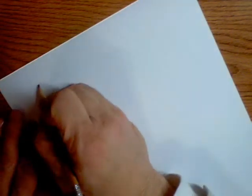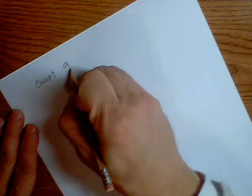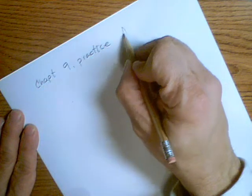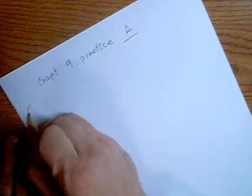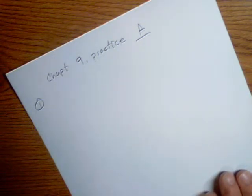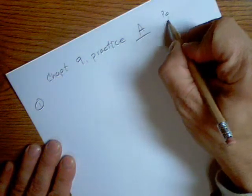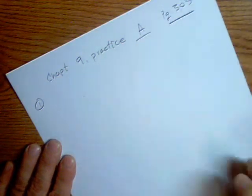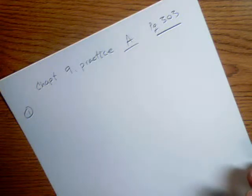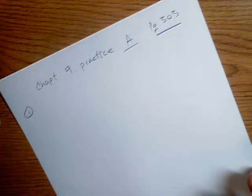Let's go on to Chapter 9 practice problems. We'll do some practice problems A. Let's do number 1 — these practice problems are on page 303. Number 1: the lowest outdoor temperature ever recorded is negative 128.6 degrees Fahrenheit, and that was in Antarctica. What is that in Celsius?